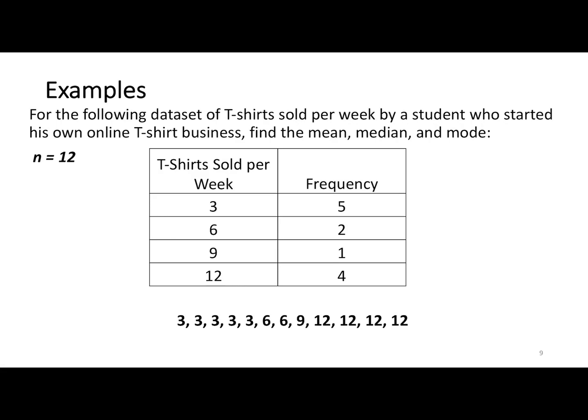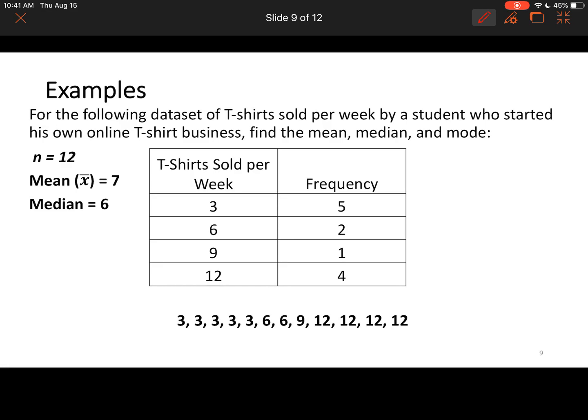We've got 12 values. The mean: you add up all these values and divide by 12, you get 7 T-shirts sold per week. The median: you've got six numbers on one side, six on the other. Add 6 plus 6 and divide by 2, which is 6. So the median is 6. The mode is the number with the highest frequency, which is 3 T-shirts.